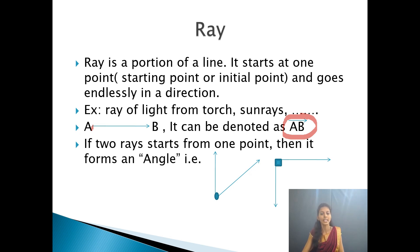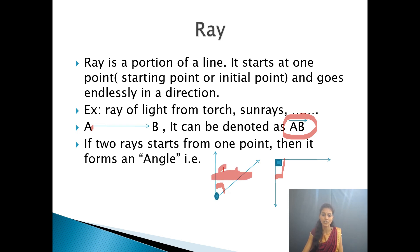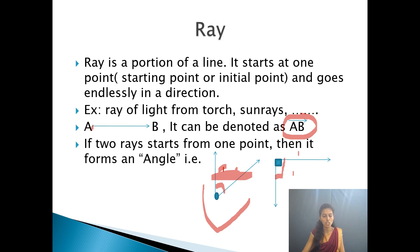If two rays start from one particular point, they form an angle. There are seven types of angles — a few have already been studied in the previous class including zero angle, and the remaining will be studied in the next chapter. In this chapter, we just study the concept of angle, including its interior part (inside the angle) and exterior part (outside the angle).